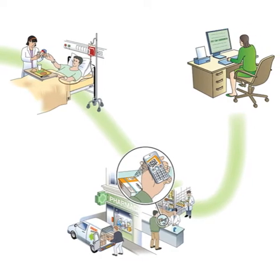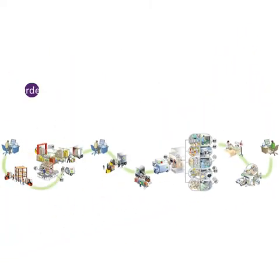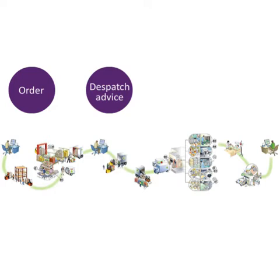The main messages in order-to-cash are: order, dispatch advice, and invoice. Further benefits are offered by response messages like order response, receiving advice, and remittance advice.